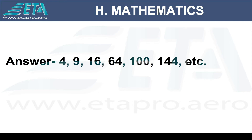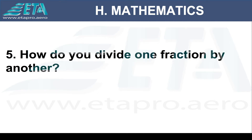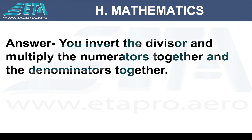How do you divide one fraction by another? You invert the divisor and multiply the numerators together and the denominators together.